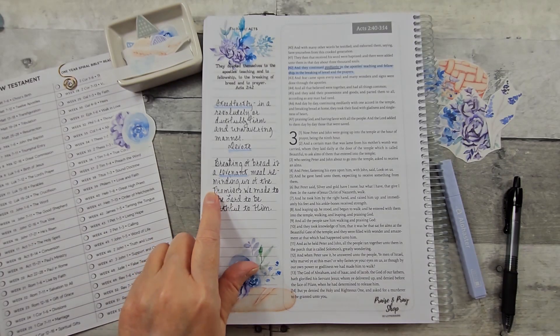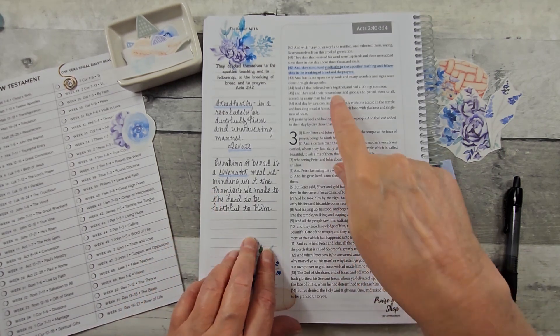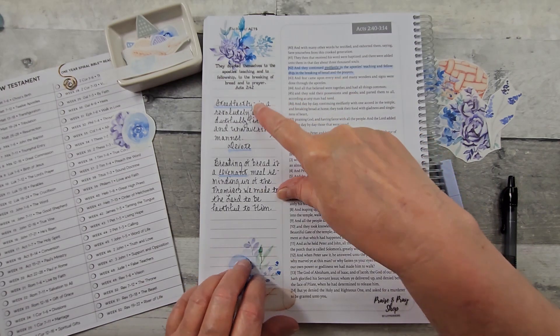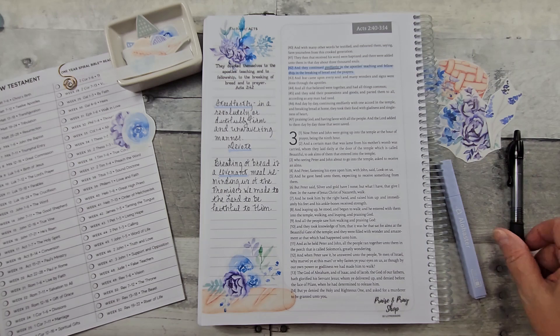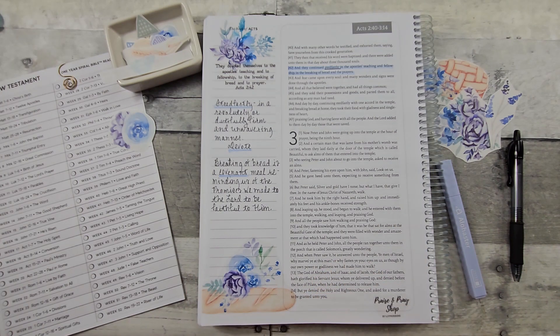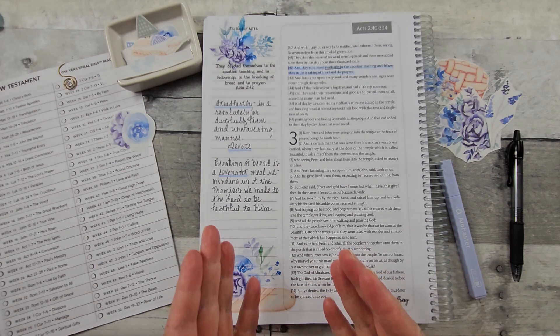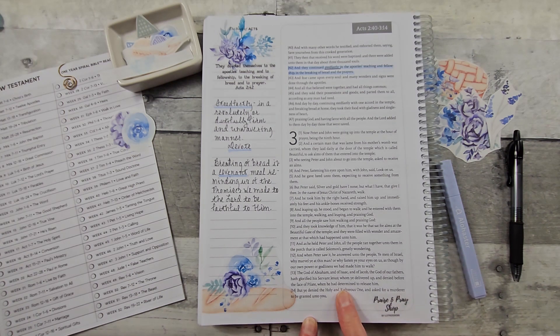So I finished writing down about the breaking of bread. And I chose to underline the word steadfastly and then highlight it, and also highlight the word covenant here. I will put my places where I go and do some research, like Bible Hub, Bible Ref, Bible Gateway. If you're wanting to look a little deeper into some scripture and have further understanding, I think you'll find those references helpful to you. I'll also put the link for Praise and Pray Shop and for the Spiral Bible.